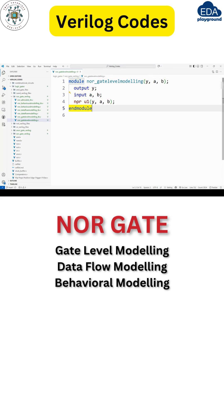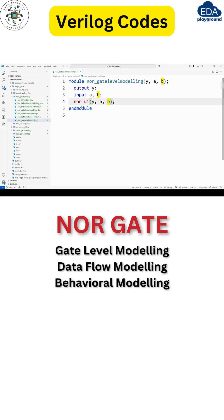Inputs are a and b, and you have to use 'nor'. Here, u1 is the instance name, followed by outputs and inputs. So: nor, instance name u1, output is y, inputs are a and b, followed by end module.